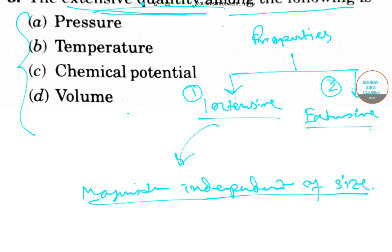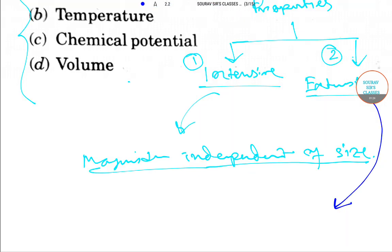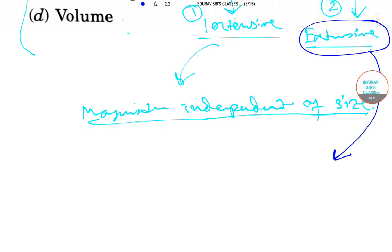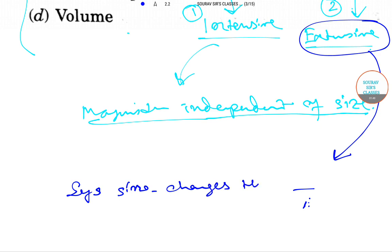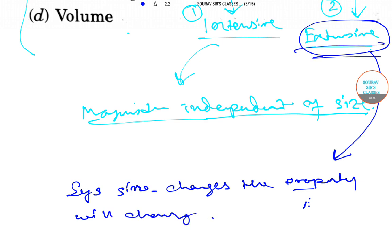Now, what is extensive property? Extensive property is the property that changes when the size of the system changes. If the system size changes, then the property will also change — that is extensive property.